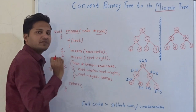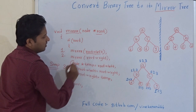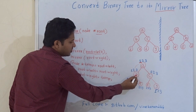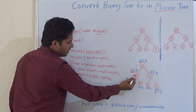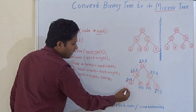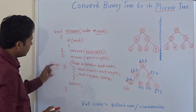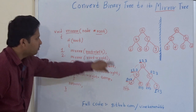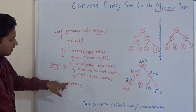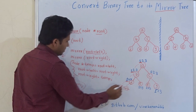Now I will execute the code on this tree so you can better understand. The first step is to go to the left child, so from the root we go to B, then from B we go to its left child D. At D, we again try the first step — go to the left child — but D's left child is null. When null is passed into the mirror function, the condition doesn't satisfy, so we return directly.